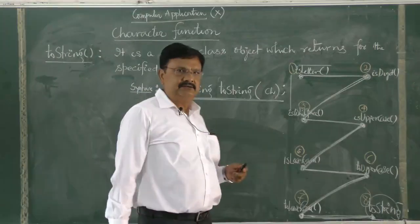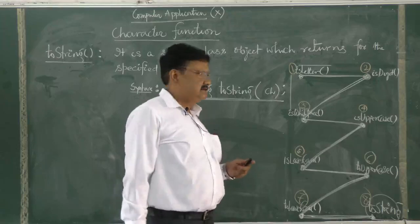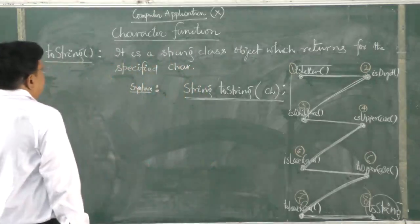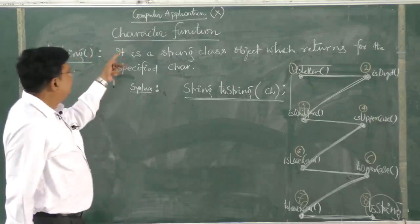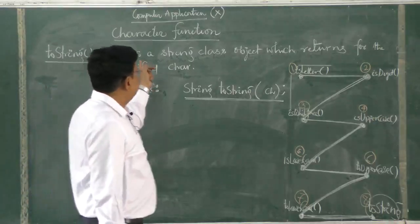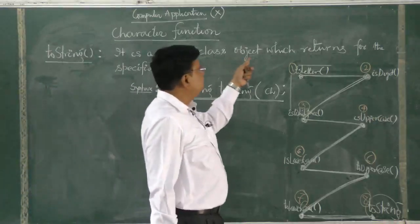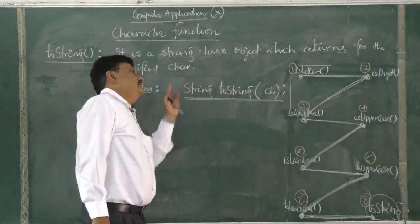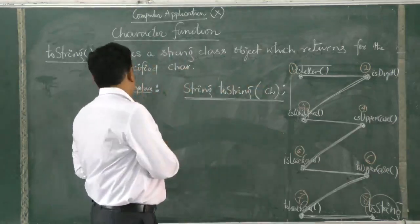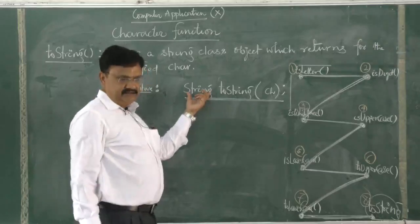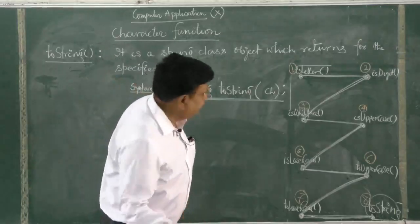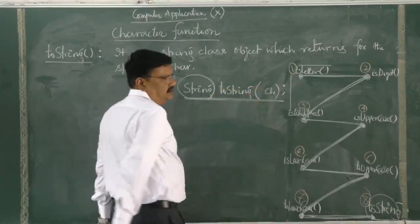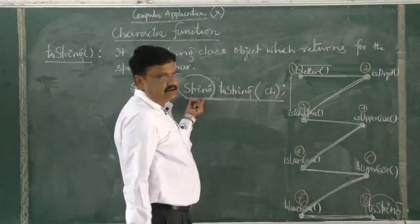We will start with toString. The function of toString is that it is a String class object which returns for the specified character. The syntax returns a string value — it returns the string toString. The return type is string.